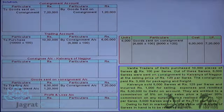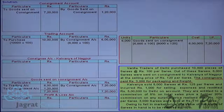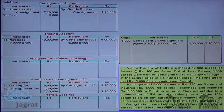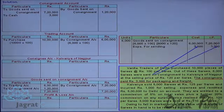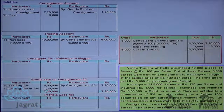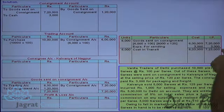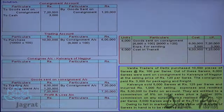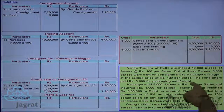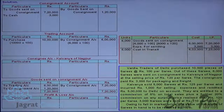The consignor paid ₹3,000 for packing and freight. Entry: consignment account debit to cash account credit — ₹3,000. This ₹3,000 will be added to find out the cost of goods in transit. This is the invoice price of goods in transit; expenses incurred are now recorded.